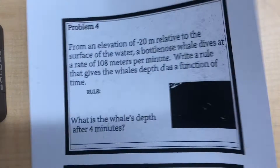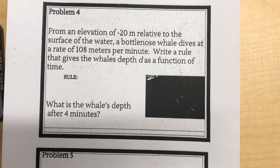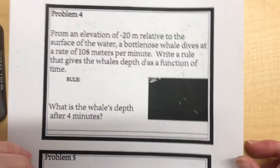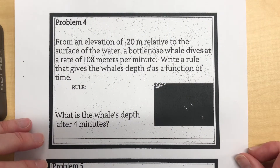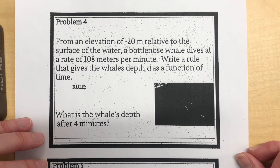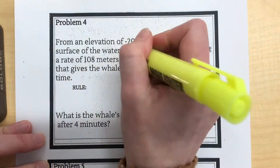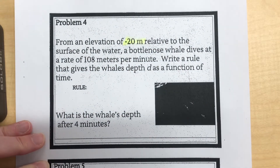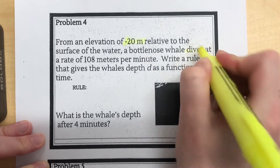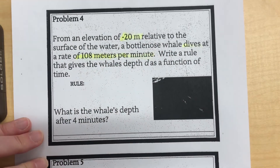Problem number 4: from the elevation of negative 20 meters relative to the surface of water — that means 20 meters below sea level — a bottlenose whale dives at a rate of 108 meters per minute. Important information: that whale is starting at negative 20 meters and diving at 108 meters per minute. We want to write a rule.